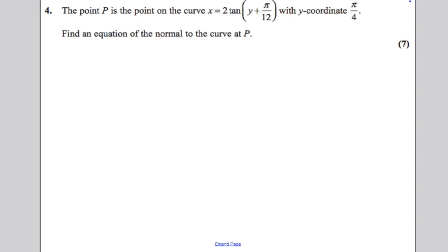This question is about differentiation and using differentiation to find the equation of a normal to a curve. We are given a curve in this question and the curve is x equals 2 tan of y plus pi by 12. We are given a point P on the curve and we're told that the y coordinate of P is pi by 4. We're asked to find the equation of the normal to the curve at P.